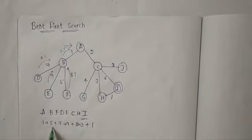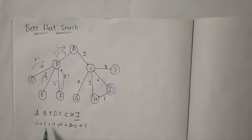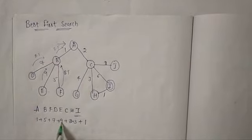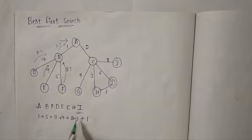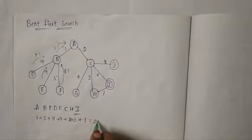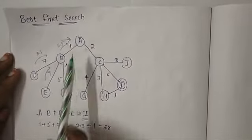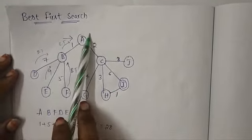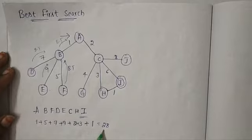Now let's calculate the path cost. 1 plus 5 is 6, 6 plus 7 is 13, 13 plus 9 is 22, 22 plus 2 is 24, and we get to 28. So from A to goal node I using best first search algorithm, the cost is 28.